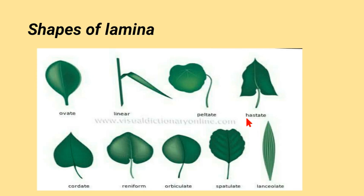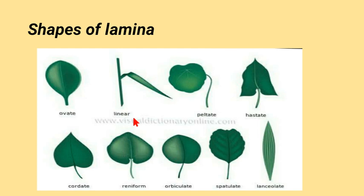Leaves differ from each other on the basis of apex, stalk, margins, and lamina shape. On the basis of lamina, leaves are divided into many shapes: oval shaped, linear shaped — monocotyledons like grasses usually have linear shaped leaves with parallel veins — and peltate leaves.